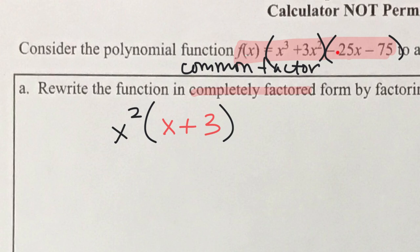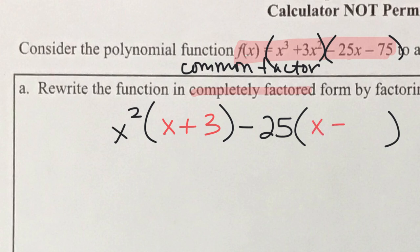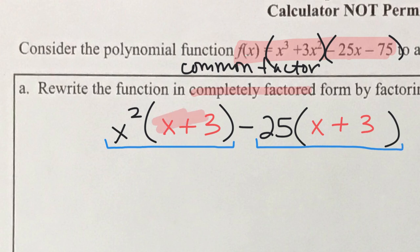Then we come to our next grouped pair, minus 25x and minus 75, and ask what these two things have in common. They have a minus 25. If your x value has a minus in it, you will always have a minus as what they have in common, which means we change the sign of what's left on the inside. Pulling out minus 25 leaves x plus 3 in parentheses. Both terms now have x plus 3 as a common multiplier, so we can factor out the x plus 3.